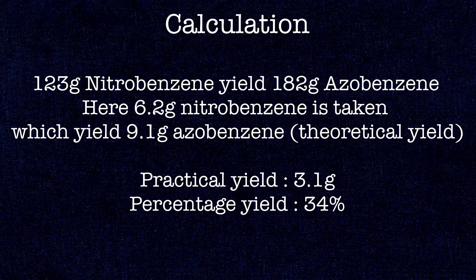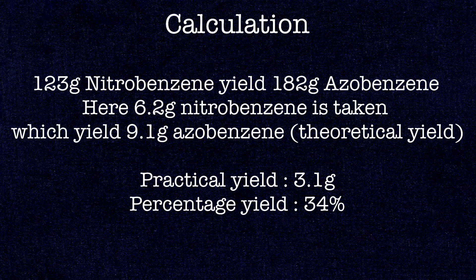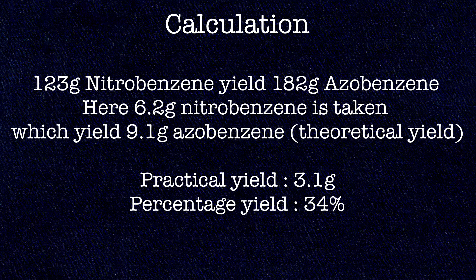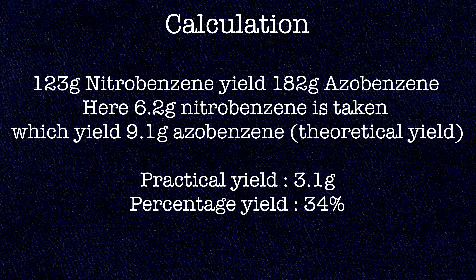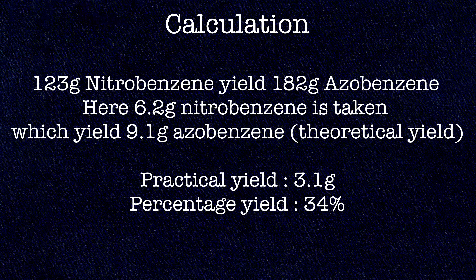The practical yield is 3.1 grams. 123 grams of nitrobenzene should theoretically yield 182 grams of azobenzene. Here we have taken 6.2 grams of nitrobenzene. So the theoretical yield is 9.1 grams of azobenzene. The practical yield was 3.1 grams. So the percentage yield is 3.1 divided by 9.1 into 100 and that is 34 percent.